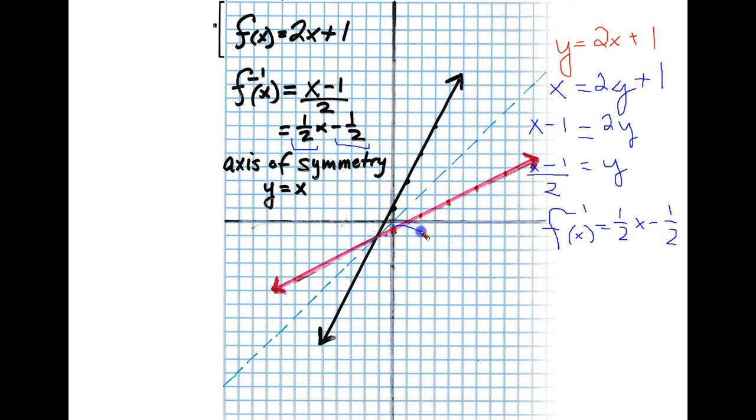So from our y-intercept here, we're going to go over 2, up 1. Over 2, up 1. Over 2, up 1. I'm just getting some more points. So then this red line is the inverse function of this.